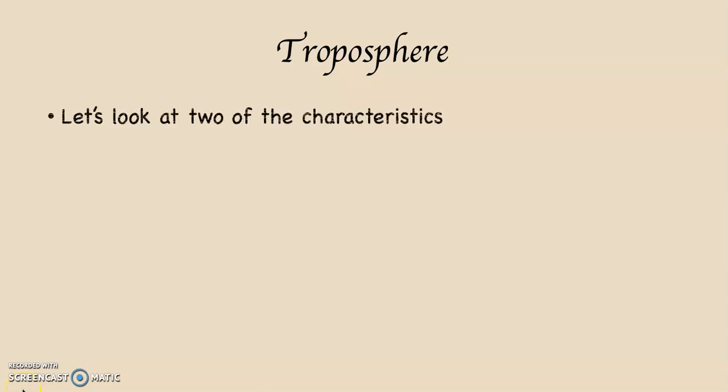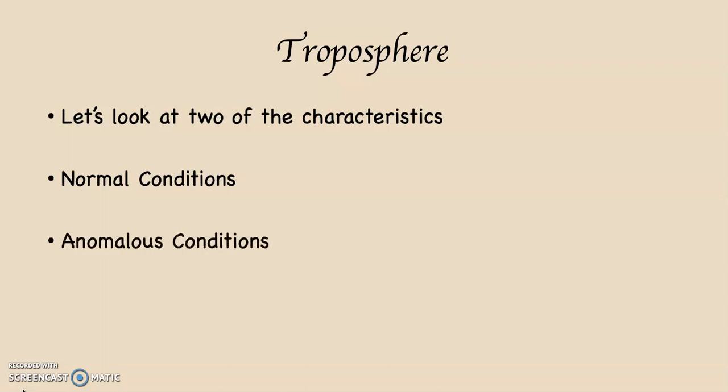We are going to turn our attention to two different characteristics of the troposphere. The first is the troposphere under normal conditions, which means increasing altitude results in decreasing temperature, or decreasing altitude results in increasing temperature. The second would be anomalous conditions — the opposite of this — meaning increasing altitude results in increasing air temperature. First we'll cover normal conditions, then come back in separate videos to pick up the anomalies.